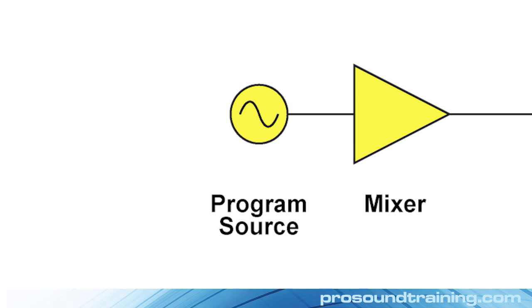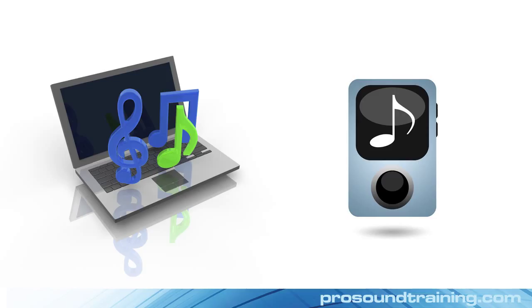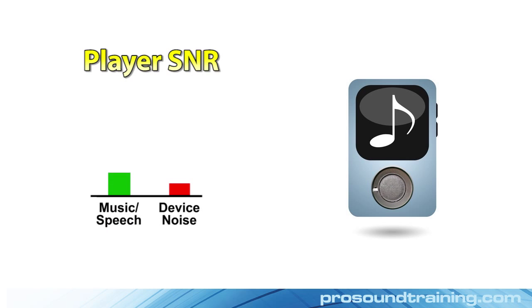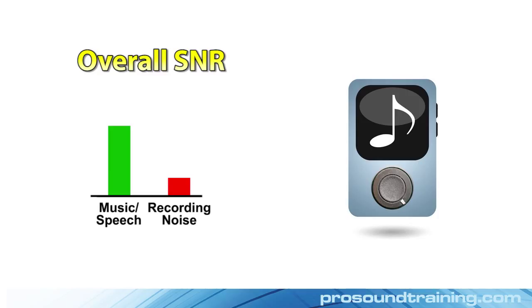Electronic program sources, such as computer sound cards and media players, produce residual noise that is largely independent of what they are playing back. This means that the higher you set the playback level, the higher the signal-to-noise ratio will be. A recording has residual noise that is dependent on the playback level of the program source — it goes up and down as the volume is changed. A high overall signal-to-noise ratio requires that you start with a low-noise recording and set the playback volume to use the full dynamic range of the player.